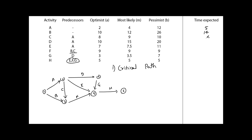The expected times for all activities are: A = 5, B = 14, C = 9, D = 15, E = 8, F = 9, G = 4, and H = 5. These TE values will be used to evaluate all possible paths through the network to determine which path has the longest duration — that will be the critical path.